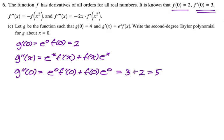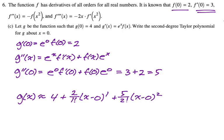And now we can just write our polynomial. So g(x) is approximately, it's the value of the function, so that's four, and then plus the first derivative, which is two over one factorial, and x minus zero to the first, plus the second derivative, which is five over two factorial, and x minus zero to the second.